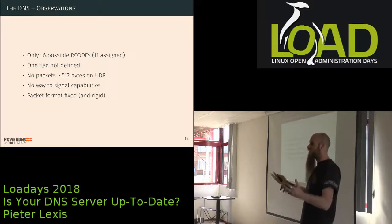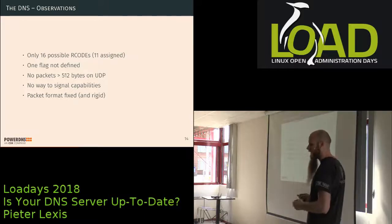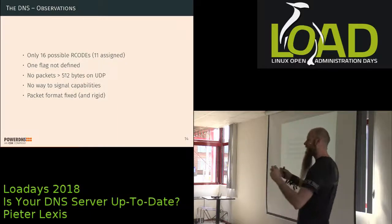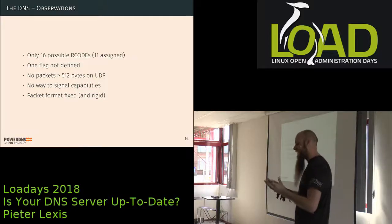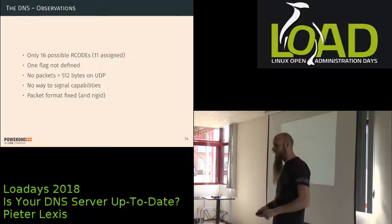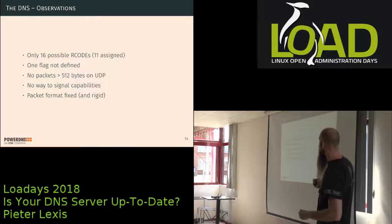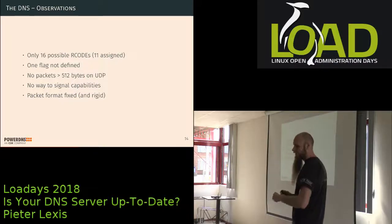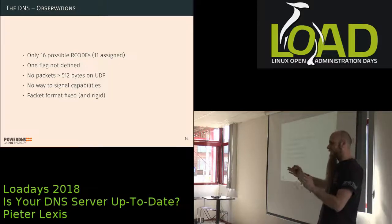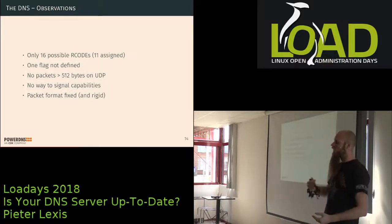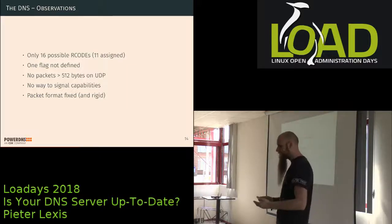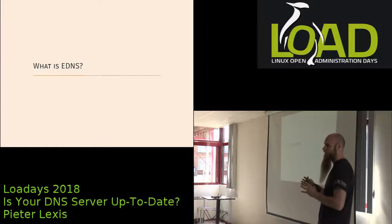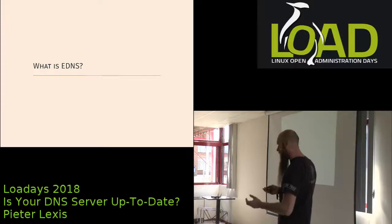Some observations about traditional DNS: there are only 16 possible response codes, of which 11 are already assigned. One flag bit in the whole header has no defined meaning — the rest is fully accounted for. For UDP, the specification says packets cannot be larger than 512 bytes total including the header. There is no way for any name server to signal capabilities or supported additional processing to another, and the packet format is completely fixed and rigid.